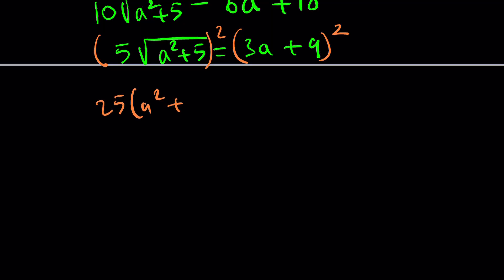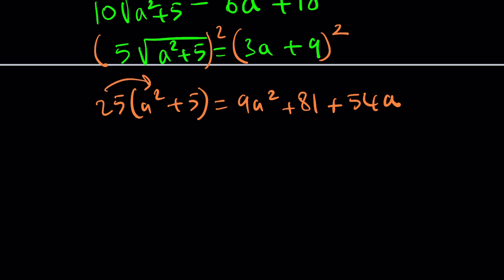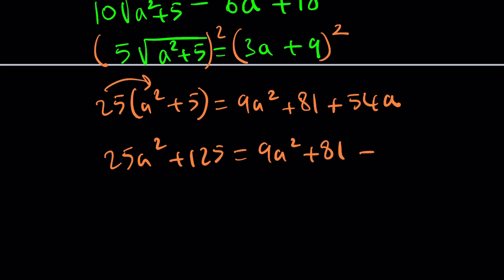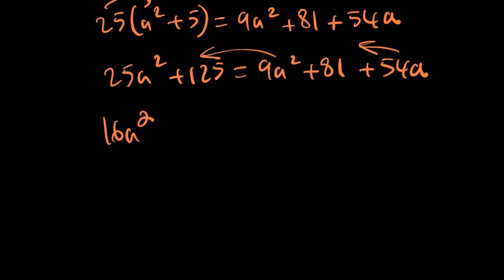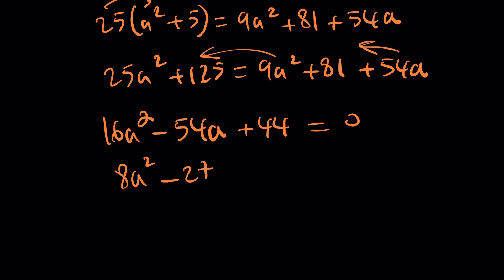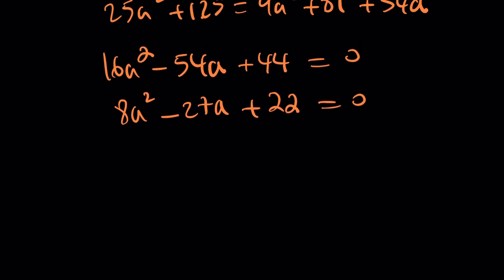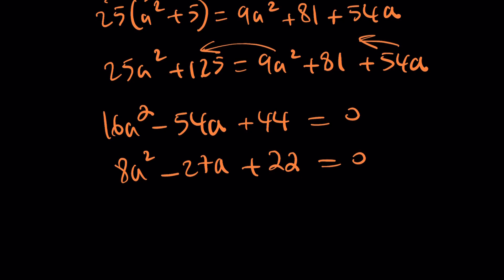Squaring both sides one last time: 25(a² + 5) equals 9a² plus 81 plus 54a. Expanding: 25a² plus 125 equals 9a² plus 81 plus 54a. Rearranging: 16a² minus 54a plus 44 equals 0, and dividing by 2 gives 8a² minus 27a plus 22 equals 0. This is a solvable quadratic — I'll leave it as an exercise for you.